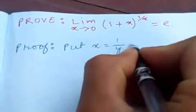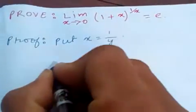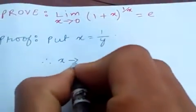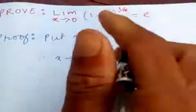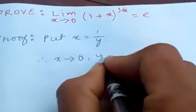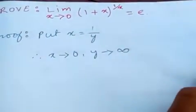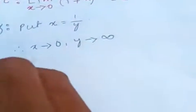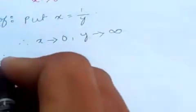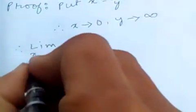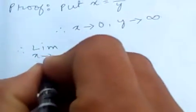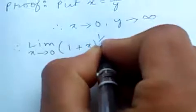Therefore, x tends to 0. Here, x tends to 0 means y tends to infinity. Therefore, limit x tends to 0 of (1+x)^(1/x) is equal to...